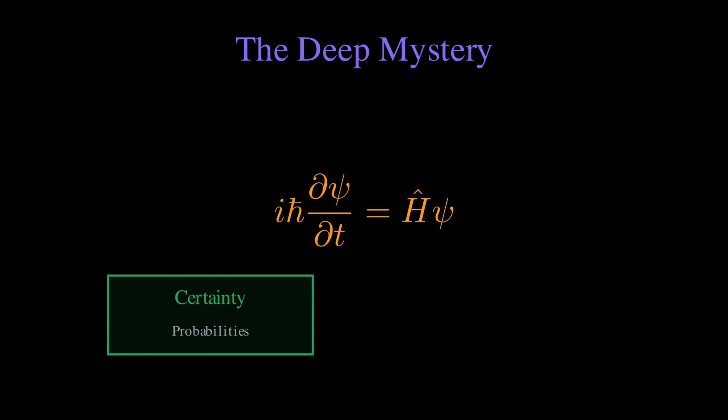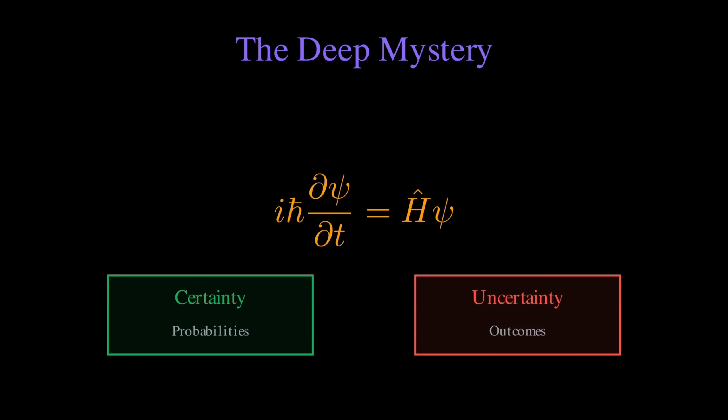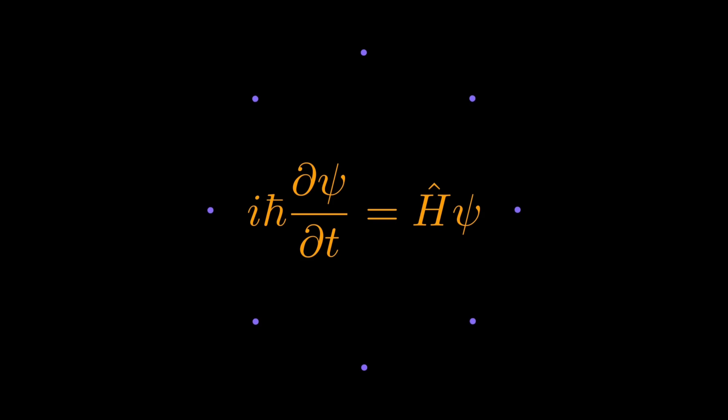The Schrödinger equation gives us certainty about how probabilities evolve, but fundamental uncertainty about what we'll actually observe. The wave function tells us everything that can be known. Yet, the outcome of any single measurement remains unpredictable. This beautiful equation opened the door to a reality stranger than anyone imagined.